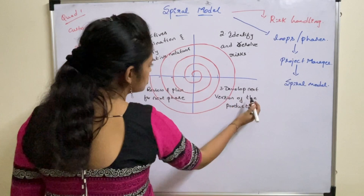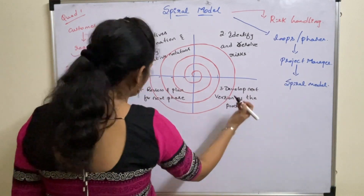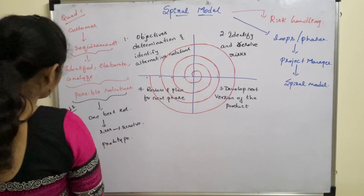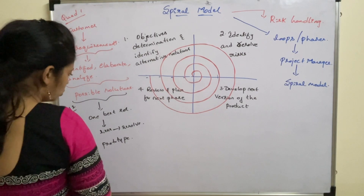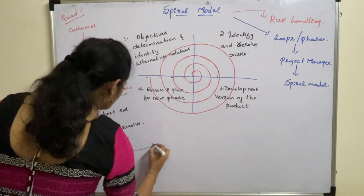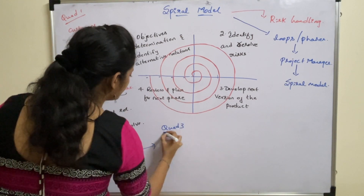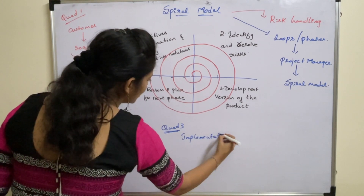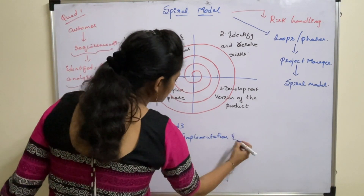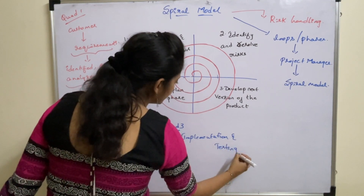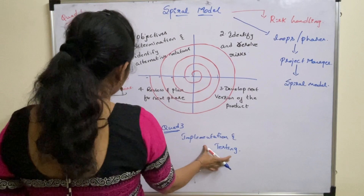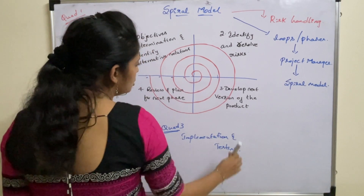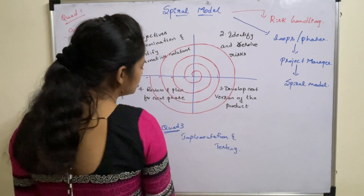In quadrant 3, you develop the next version of the product. For the selected solution, you write code — implementation, that is coding, is done here. Once the product is implemented, it goes through testing to examine whether the solution is working properly after implementation. Here you develop the next version of the software.